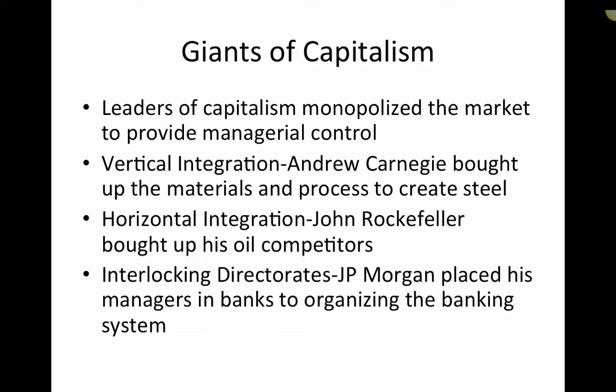The first was vertical integration — Andrew Carnegie bought up materials and the process to create steel. Horizontal integration was done by John Rockefeller, who would buy up his oil competitors. Last was J.P. Morgan, probably the most powerful of all, who did something called interlocking directorate.